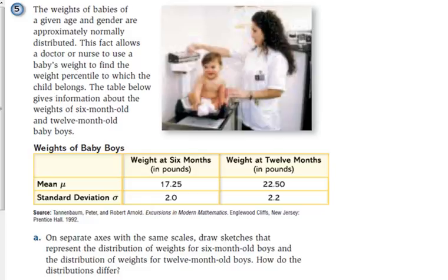We've got six months old and we have 12 months old for their weights. It says on separate axes with the same scales, draw sketches that represent the distribution of weights for six-month-old and 12-month-old. So you've got two graphs there above that problem. You're going to graph them on separate ones.